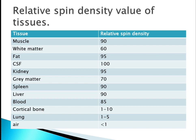These are the spin density values for each tissue: muscle 90, white matter 60, fat 95, CSF 100, kidney 95, gray matter 70, spleen 90, liver 90, blood 85, cortical bone 1–10, lung 1–5, and air less than 1. Tissues having a greater spin density value will appear brighter, whereas tissues having a lesser spin density value will appear darker in proton density weighted imaging.